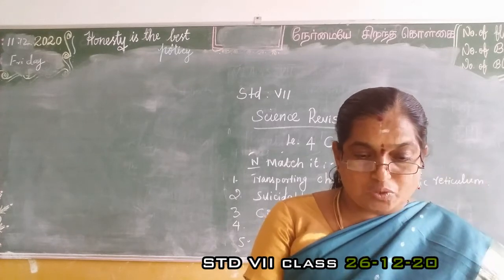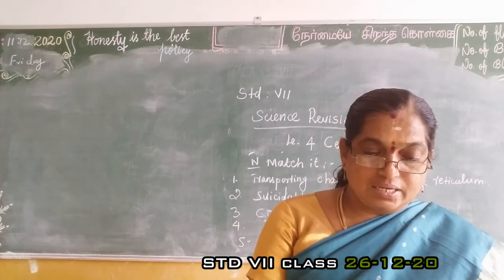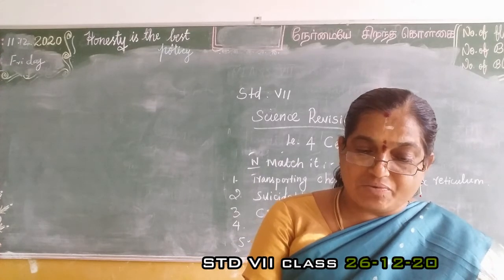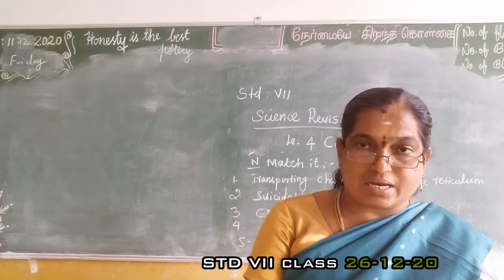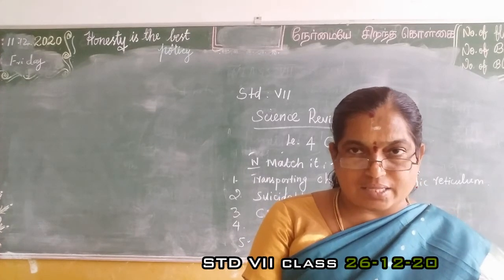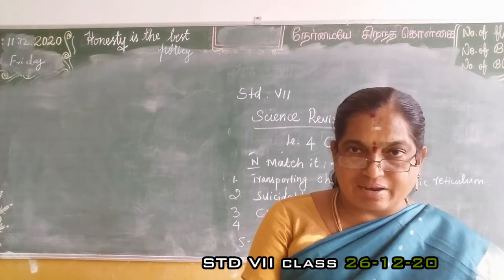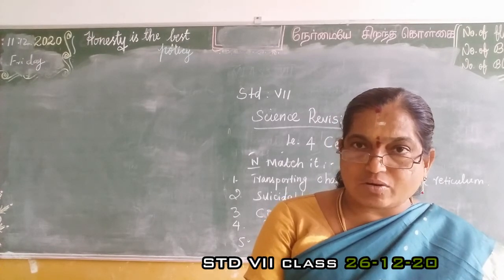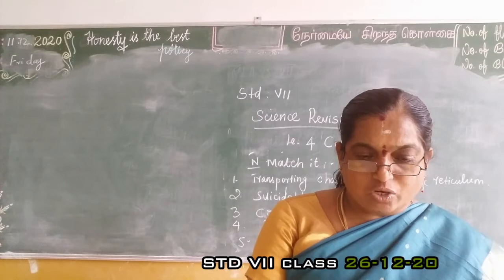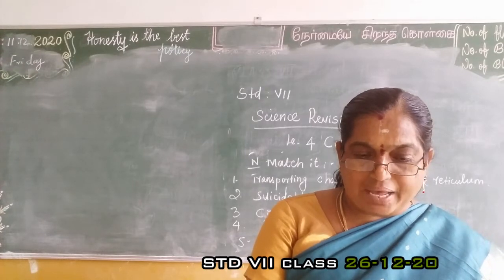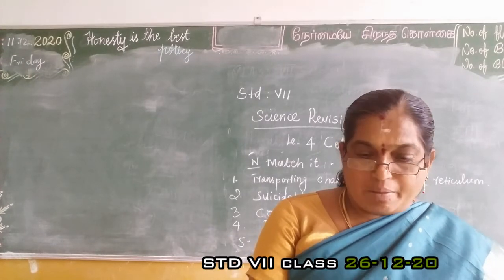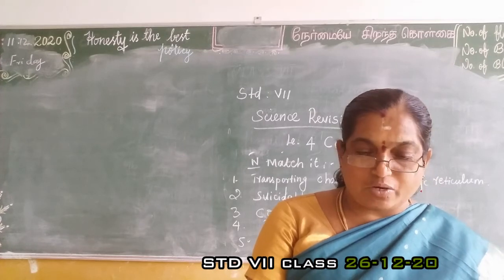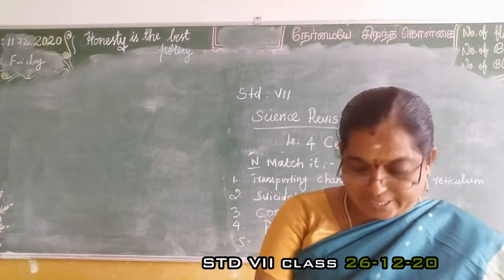Second analogy: adipose is a tissue; eye is an organ. Third: cell wall belongs to plant cell; centriole belongs to animal cell. Fourth: chloroplast is to photosynthesis as mitochondria is to cellular respiration.